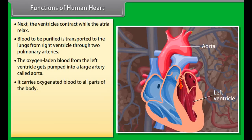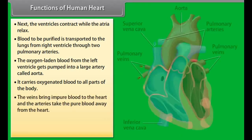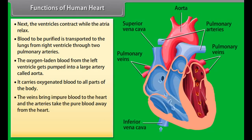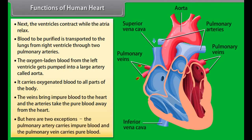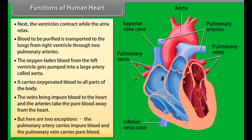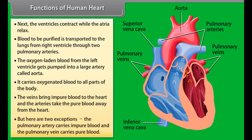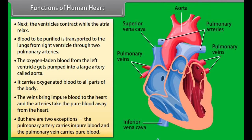The aorta carries oxygenated blood to all parts of the body. Veins bring impure blood to the heart and arteries take pure blood away from the heart, but there are two exceptions: the pulmonary artery carries impure blood, and the pulmonary vein carries pure blood.